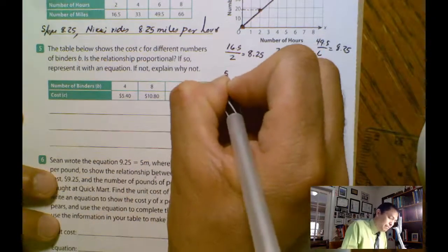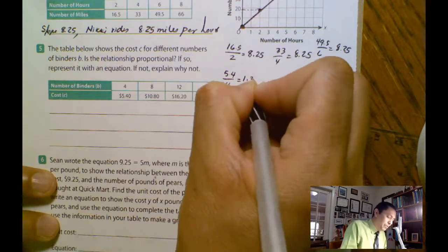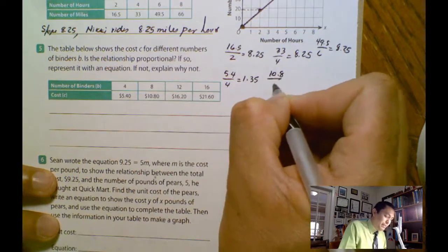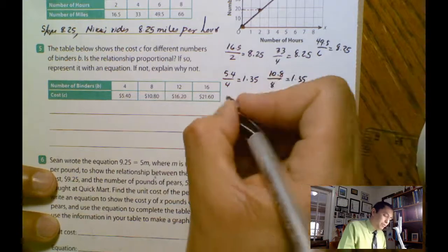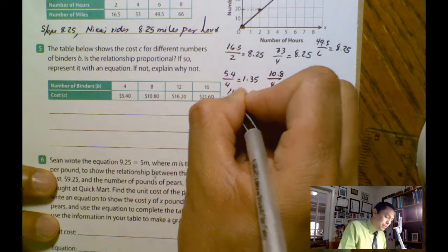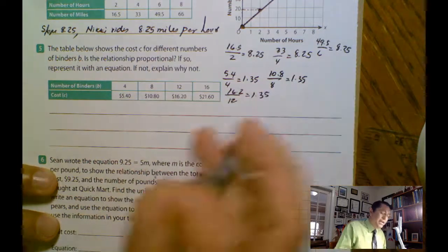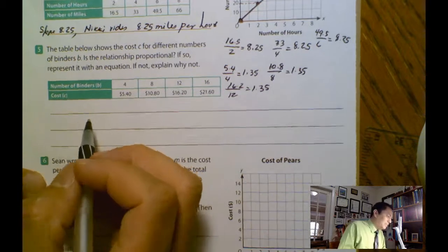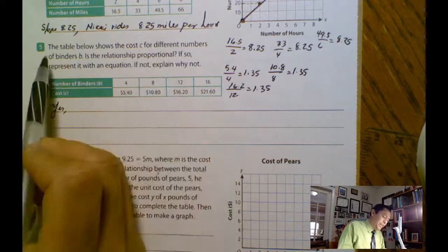So I have 5.4 divided by 4 equals 1.35. Then you say 10.8 divided by 8 equals 1.35. Then I'm going to say 16.2 divided by 12 is exactly the same, 1.35. So we have a constant rate of change. That's the slope. So in this case, I'm going to say yes.